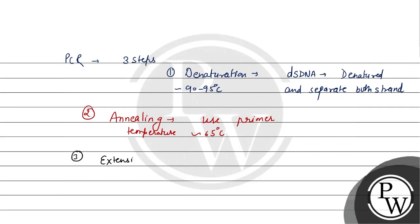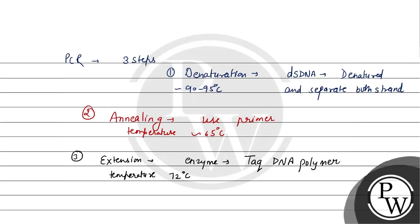In the extension step, the temperature required is 72 degree Celsius. The enzyme used here is Taq DNA polymerase, which can tolerate high temperatures and is used in the step of extension.